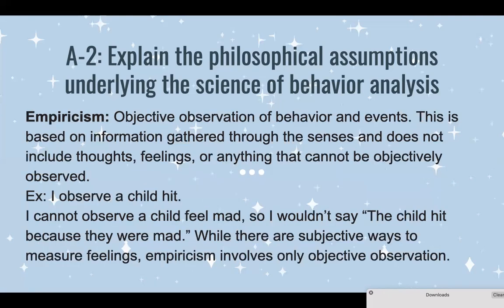Empiricism is objective observation of behaviors and events. This is based on information gathered through our senses — sight, touch, smell, and all of those — and does not include thoughts, feelings, or anything that can't be objectively observed. For example, I can observe a child hit, but you cannot observe a child feel mad, so I wouldn't say the child hit because they were mad. Empiricism only involves objective observation through your senses.